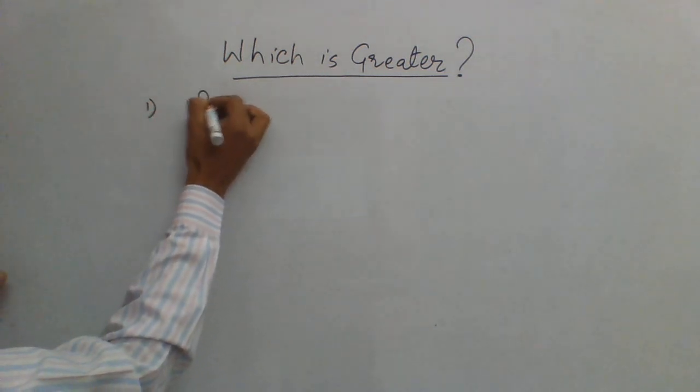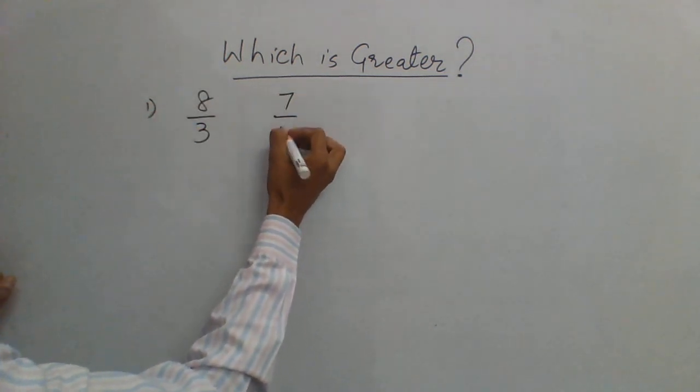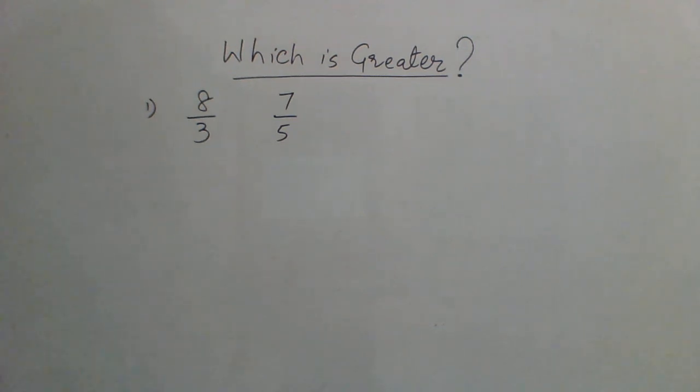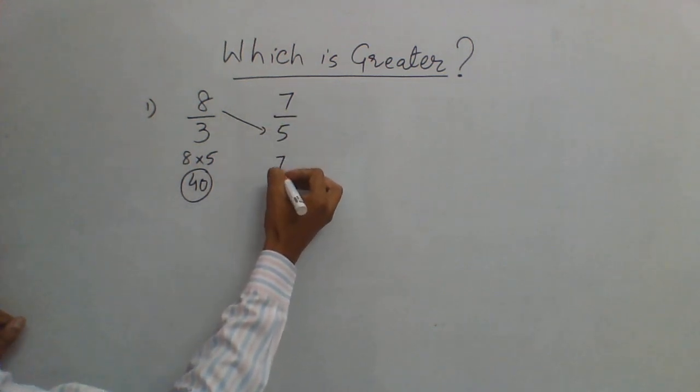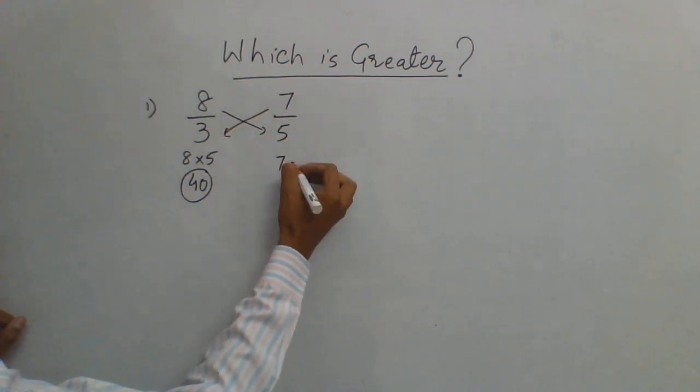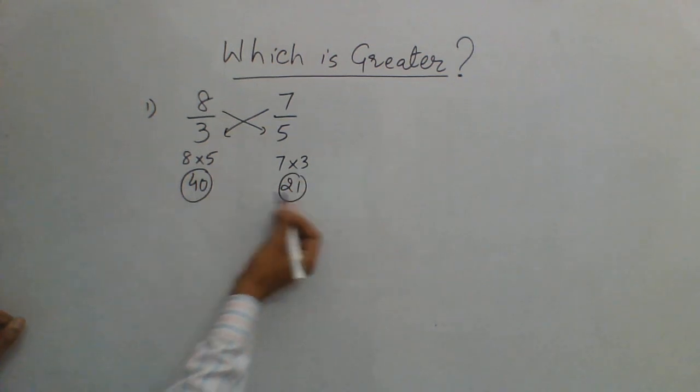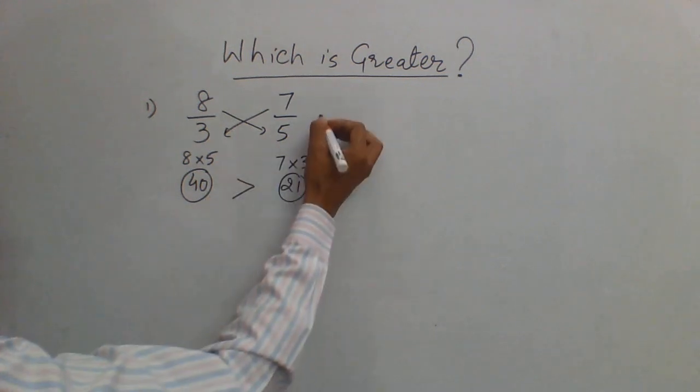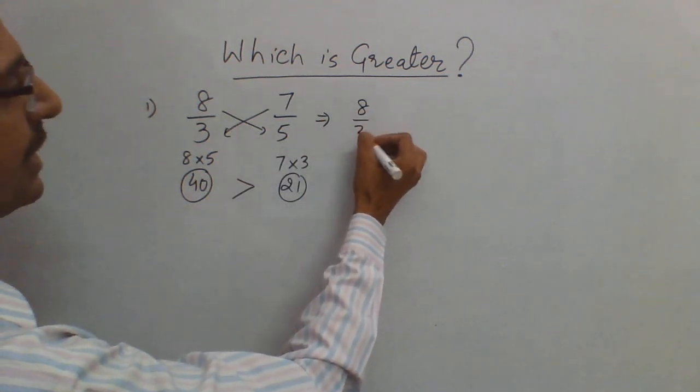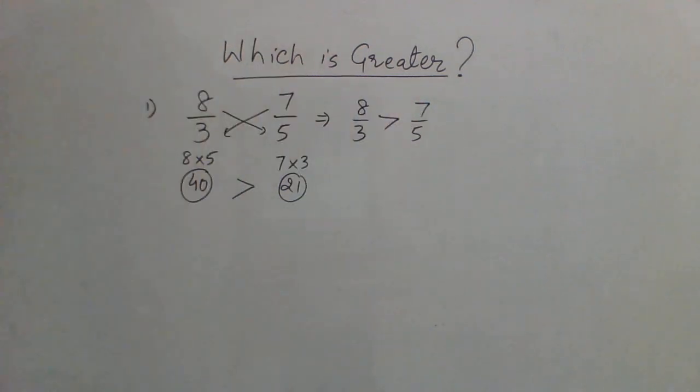Suppose you have 8 upon 3 and 7 upon 5. Now I want to find which of these two is greater. See, the numerator here 8 is giving a product of 40 with the denominator. So always go by the numerator first. So 7 giving a product of 21. So which product is greater? 40 is greater, right? So 40 is greater than 21. That means 8 by 3 is greater than 7 by 5. Very simple. Now this is how you need to identify which of the fraction given to you is greater.